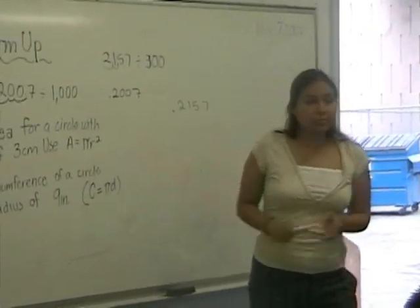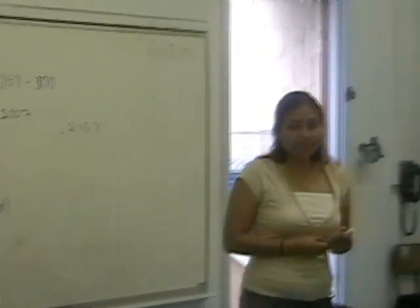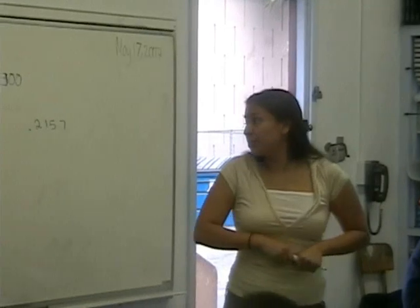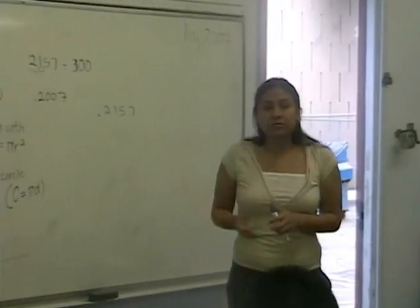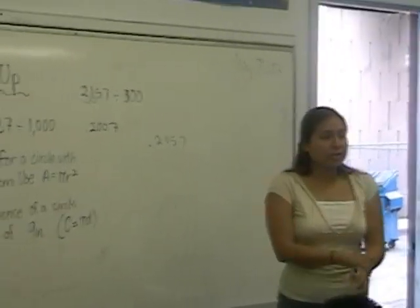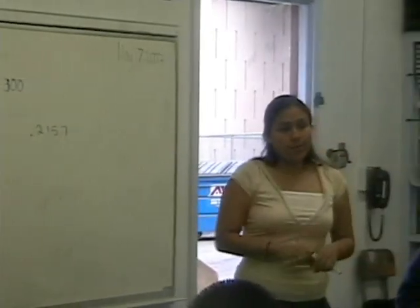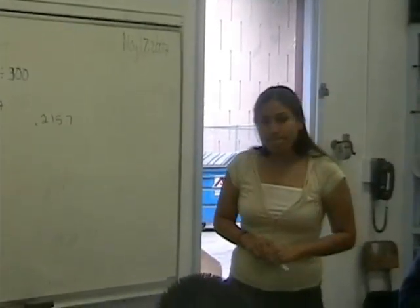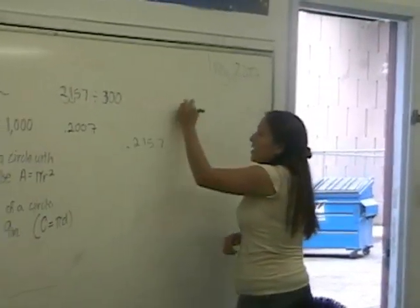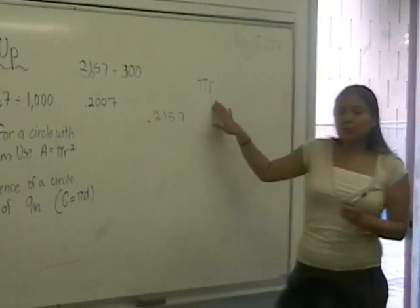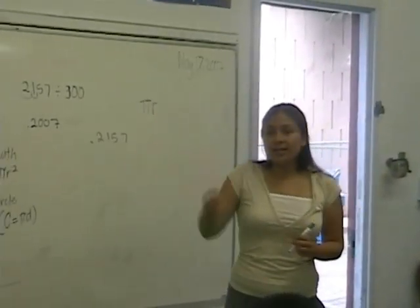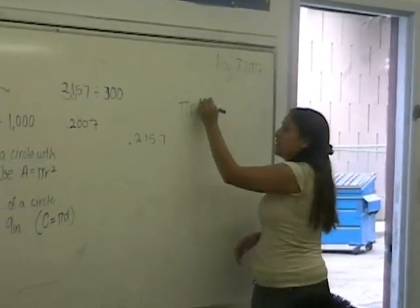Did you guys figure out number two, the area? First of all, what is the area of the circle? What is the formula for it? Pi times the radius — just the radius? Or what else is missing? Square. Square, right.